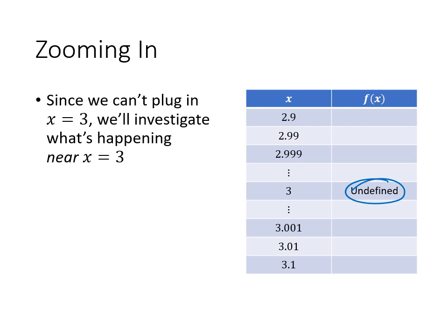So plugging in exactly 3 doesn't work. But if I plug in numbers that are close to 3 and a little bit below 3, so these numbers are close to 3 and below 3, these numbers are close to 3 and above 3, and essentially what I'm doing is I'm zooming in on 3. The closer I get to 3, the better sense I'll get as to what's happening at 3.